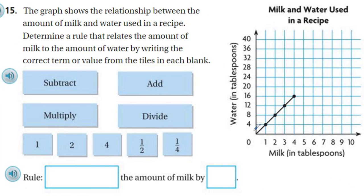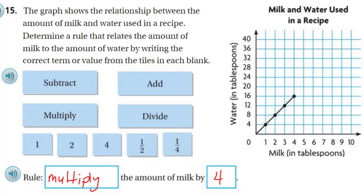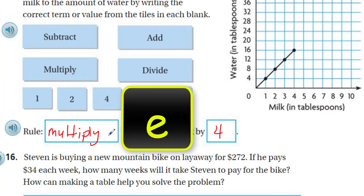Now it says to determine the rule. It looks like we have subtract, add, multiply, divide, and then we have some numbers. Okie dokie. Let's get started. Rule. Well, I look at that relation. I see one, four, two, eight. I see maybe multiply by four. Three, twelve. Times four. Four times four, sixteen. Woo hoo. Got it. Oh, the rule. Oh, what? The amount of milk by. So this is where one of these words comes in. And that, my friends, is multiply. The amount of milk by, and we just did that, which was four. That's it. That was all. That was so easy.